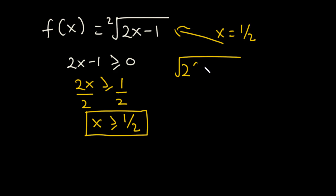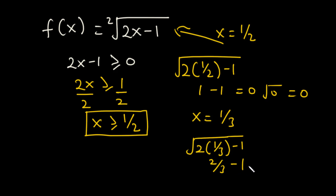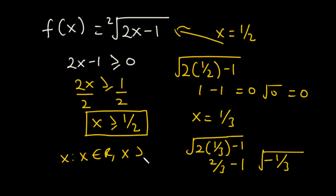This means the function is defined for values of x greater or equal to 1 over 2. Let's confirm: putting x equals 1 over 2 gives the square root of 2 times 1/2 minus 1, which equals the square root of 0, which equals 0 — defined. If x equals 1 over 3, which is less than 1/2, we get the square root of negative 1 over 3 — undefined. So the domain is x is such that x is the set of all real numbers and x is greater or equal to 1 over 2.